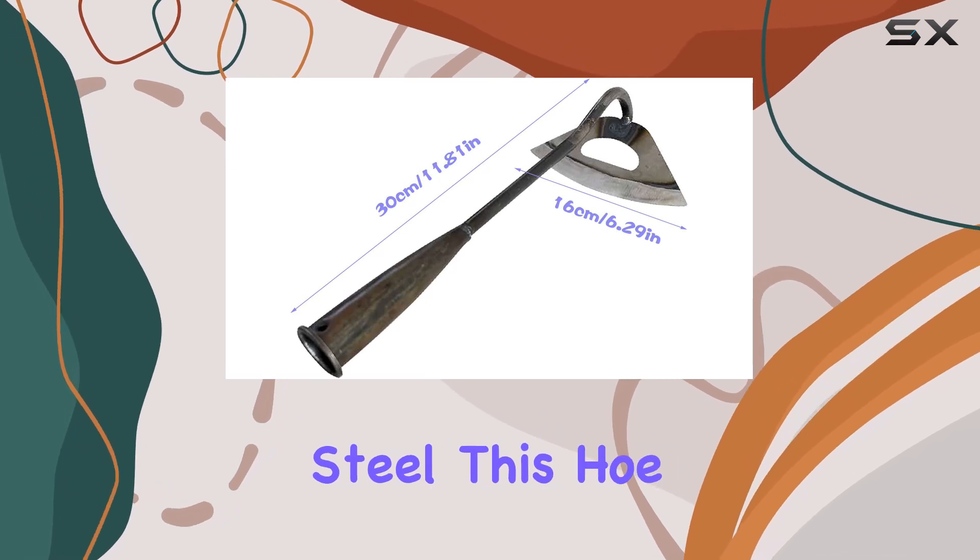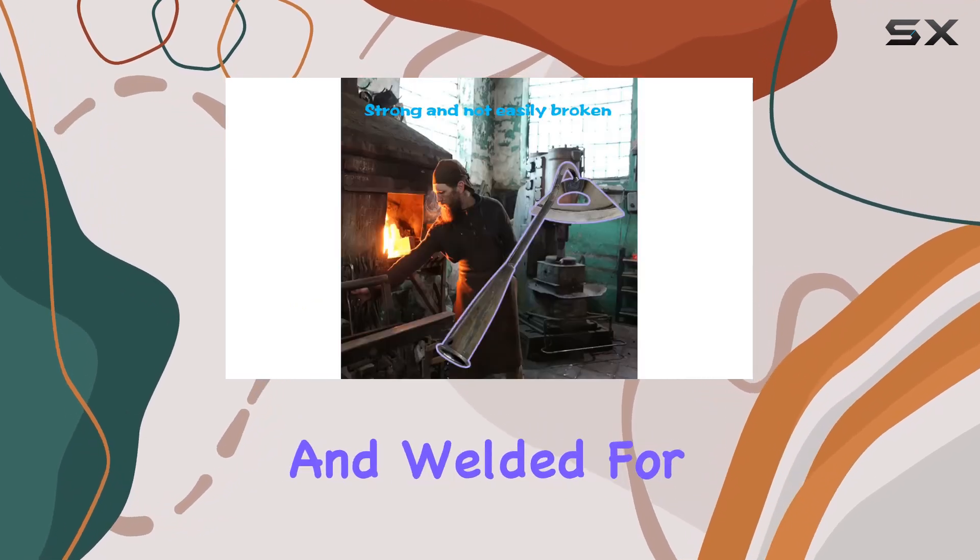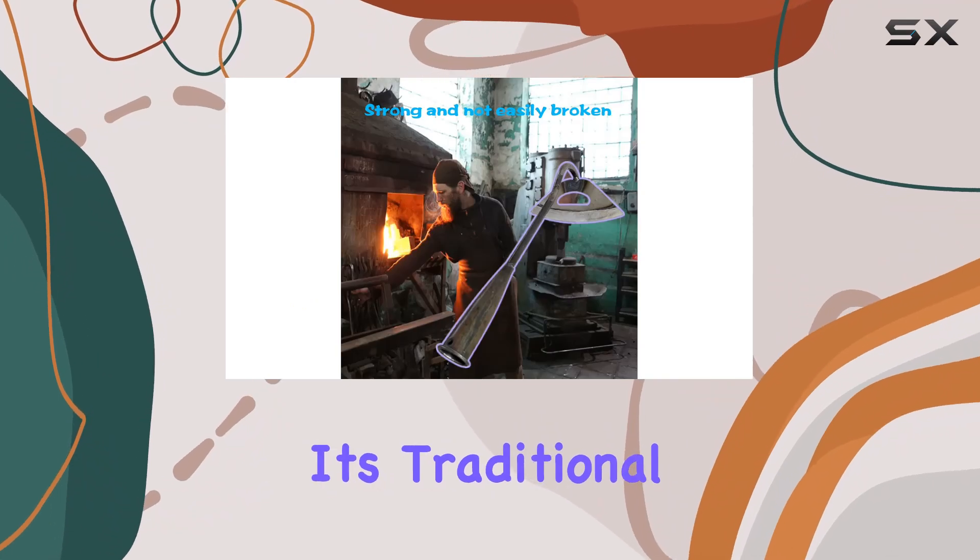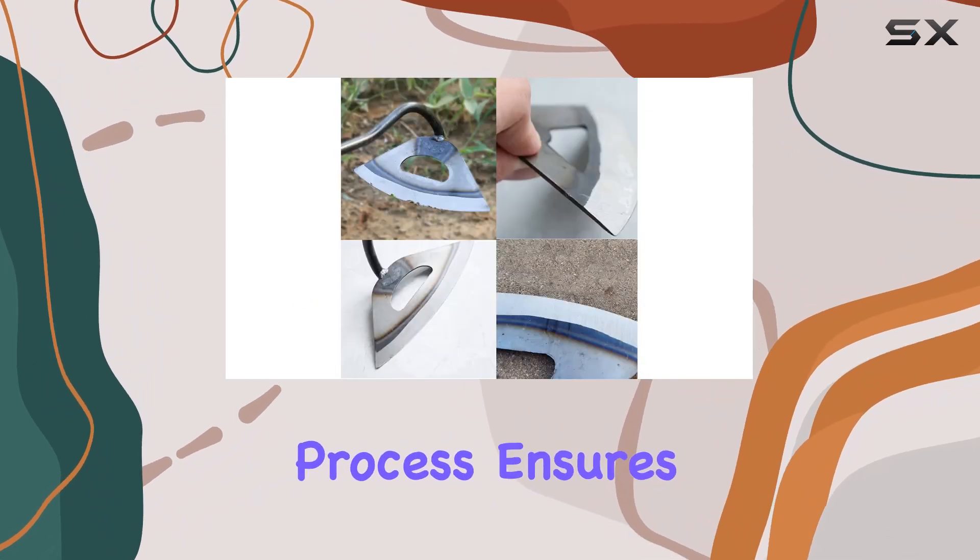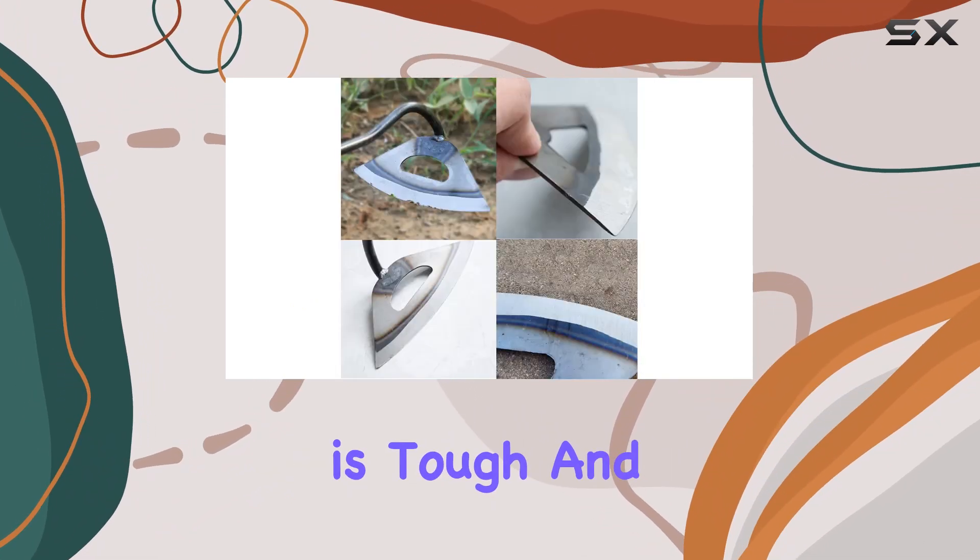Crafted from high-quality steel, this hoe is hand-forged and welded for superior durability. Its traditional quenching forging process ensures that the tool is tough and long-lasting.